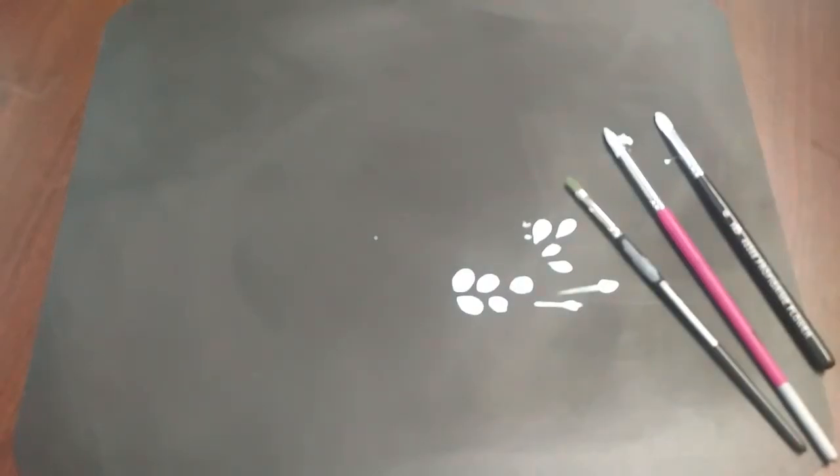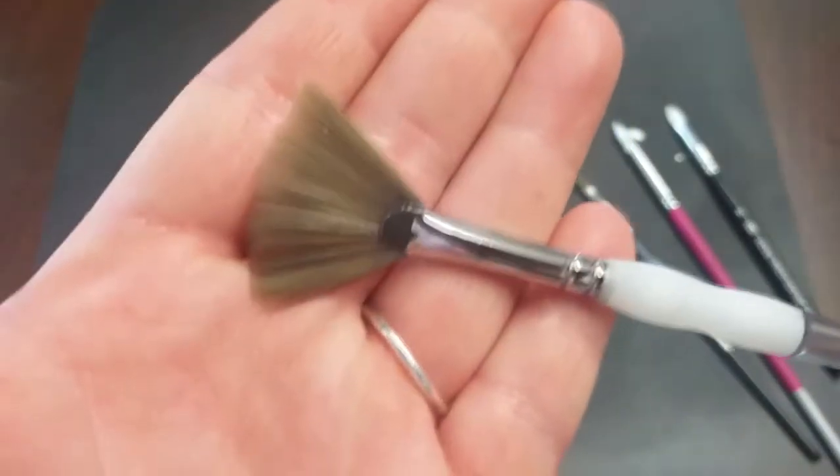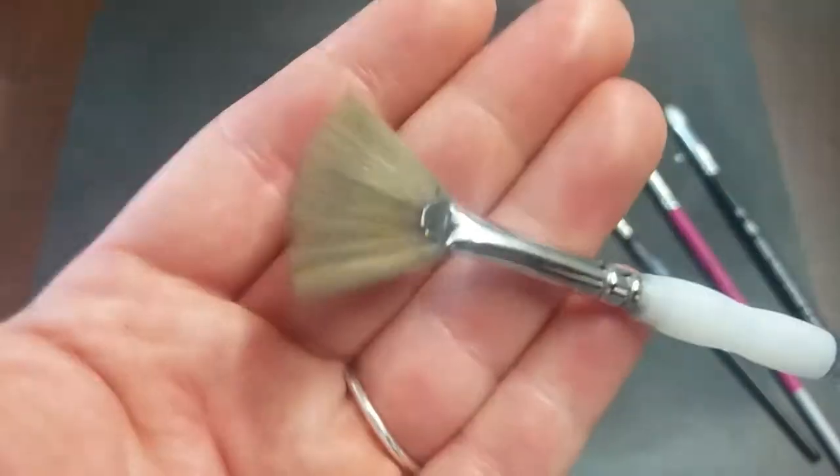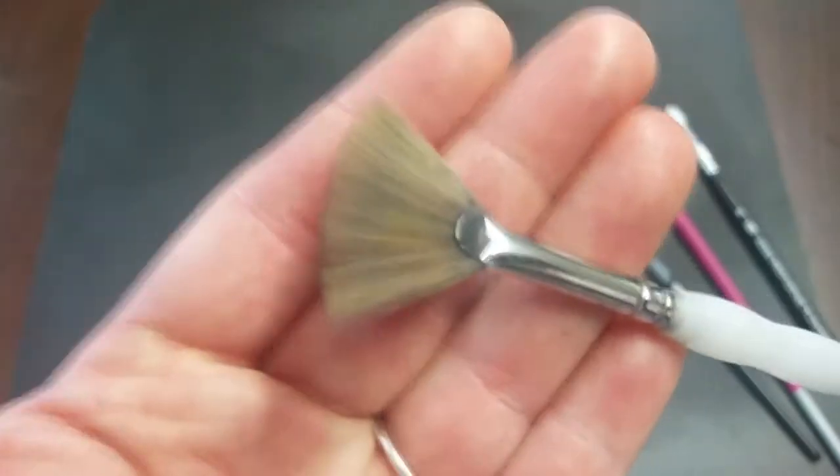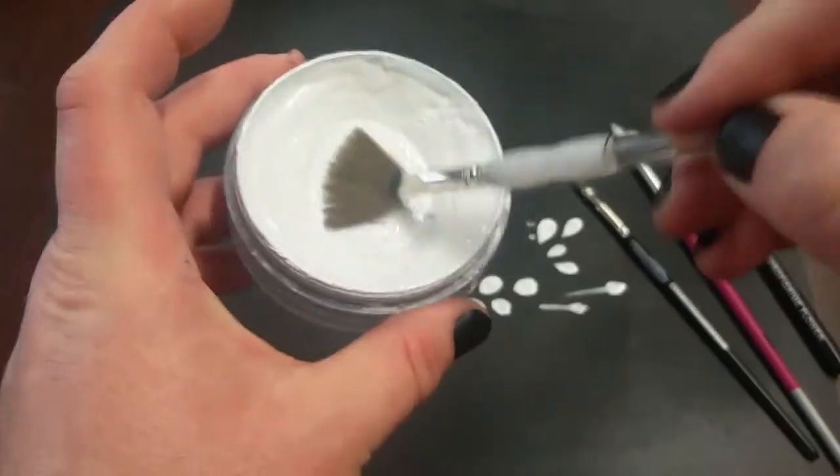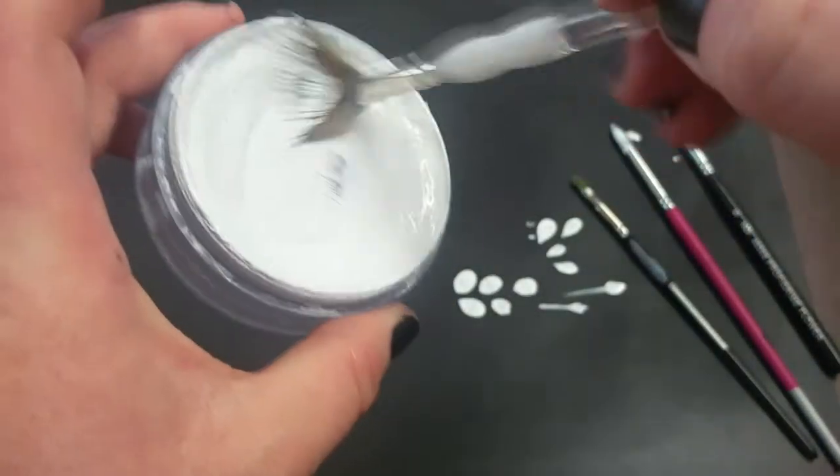The next brush I'm going to show you is one I actually use a lot on wiggly children, mostly because it just makes life easier. It's a fan brush. As you can see, it's got a very thin edge of few bristles, but they fan out into a fan shape, hence called fan - pretty self-explanatory.